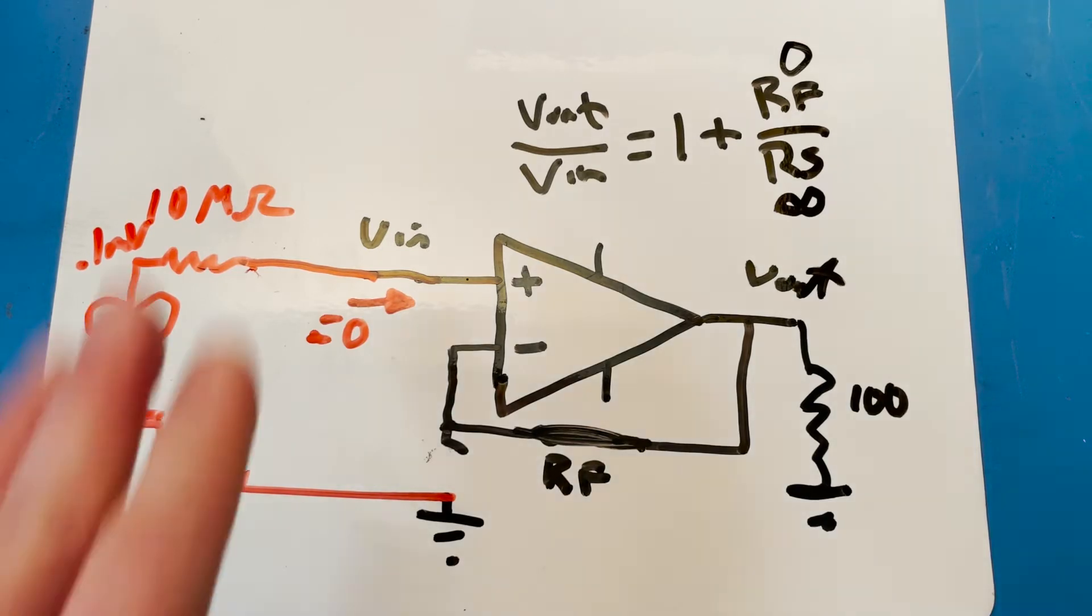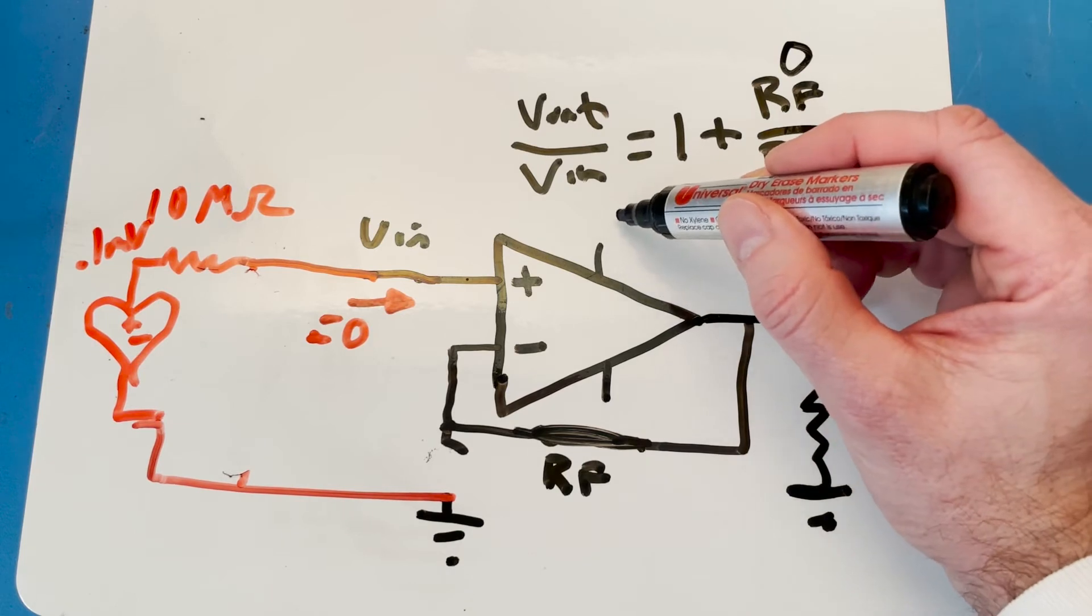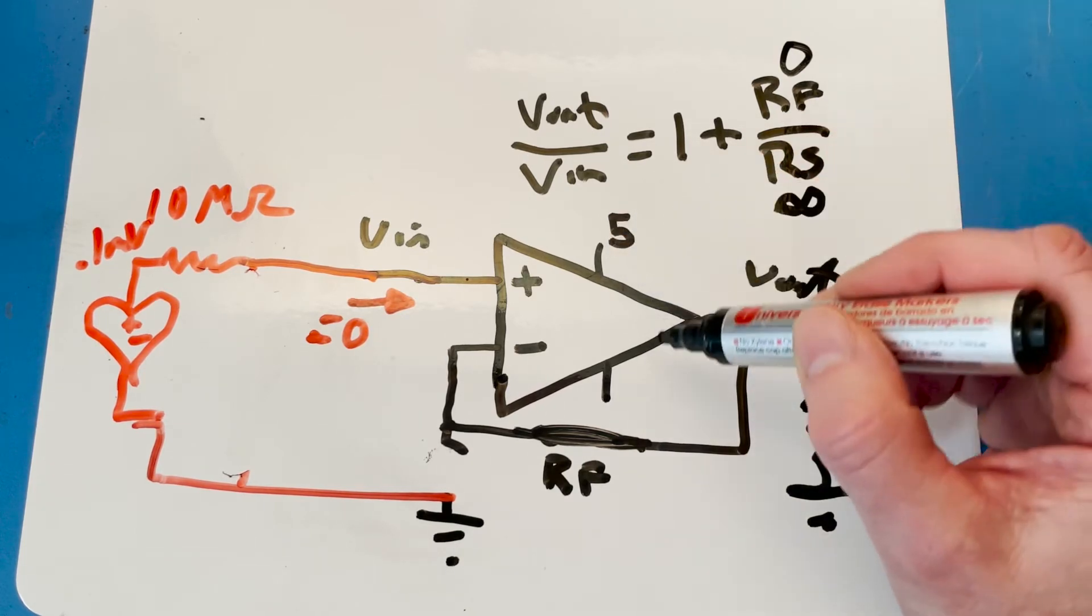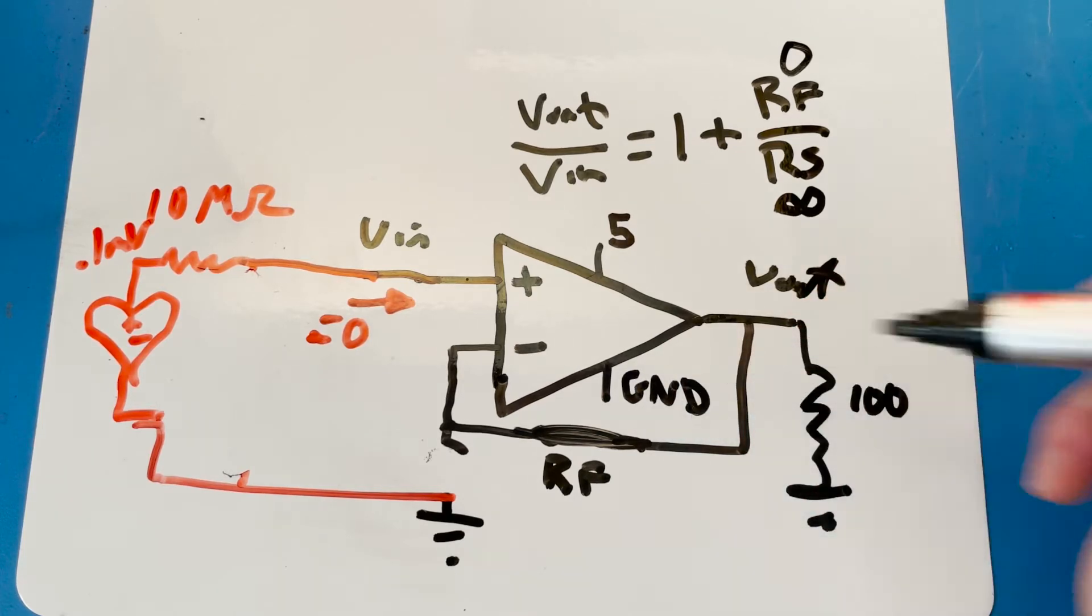So we're going to build this circuit in the lab, and we're going to build that part. We're not going to do any EKG today. And to make it complete, we're going to have 5 volts connected to our VDD, and this pin is going to be connected to ground. So that's the negative power supply of the op-amp.